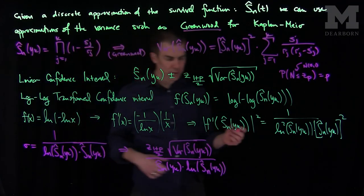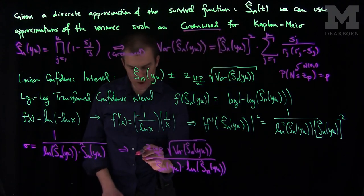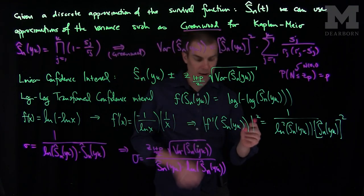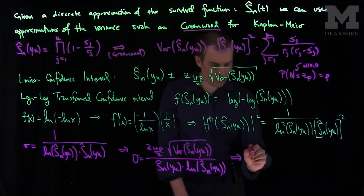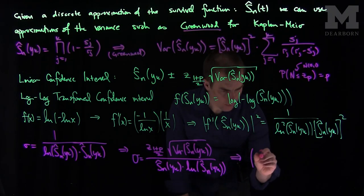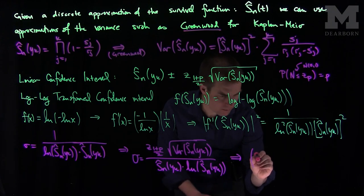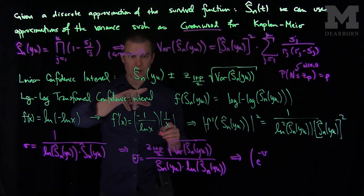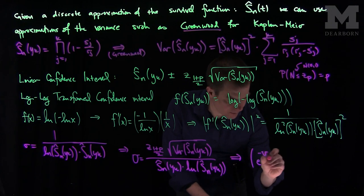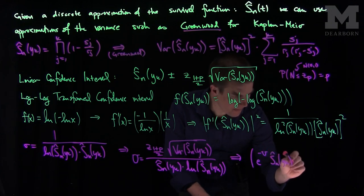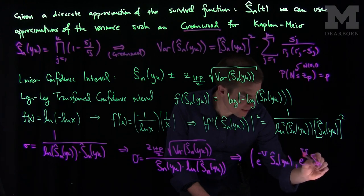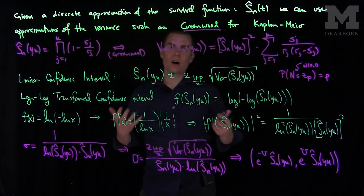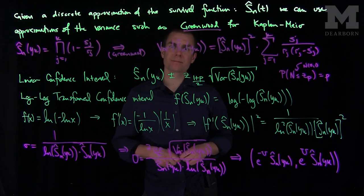With plus or minus of the factor u, our log confidence interval will be: e to the negative u times Sn hat of yk, and e to the positive u times Sn hat of yk. This expression with the extra exponential factor, derived by the delta method, gives the log-log transformed confidence interval of our survival function. Thank you very much.